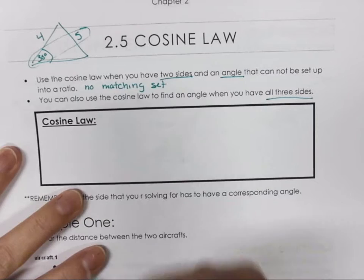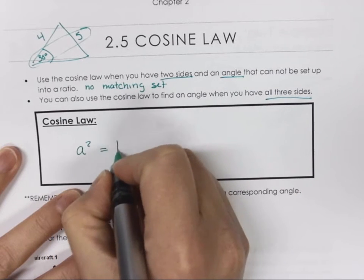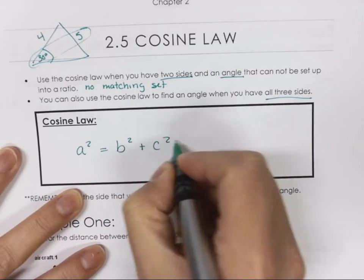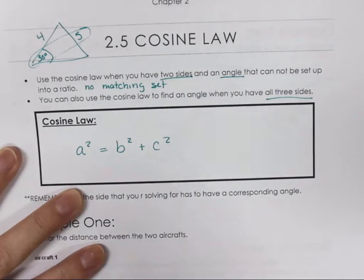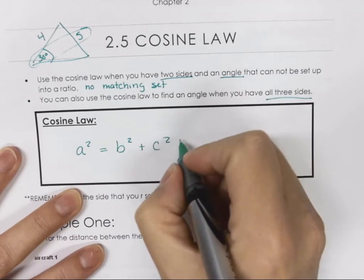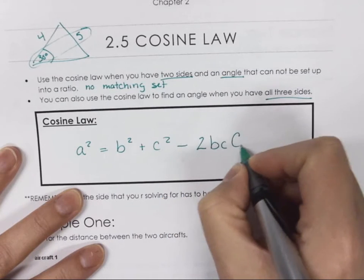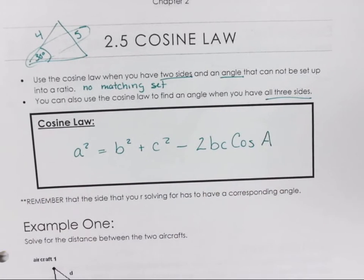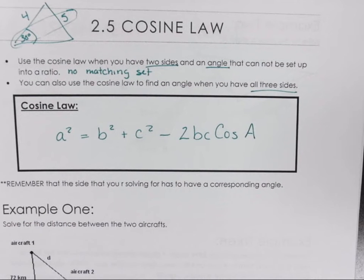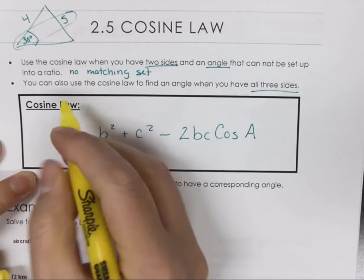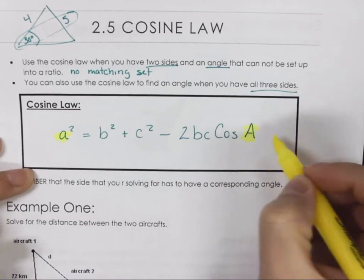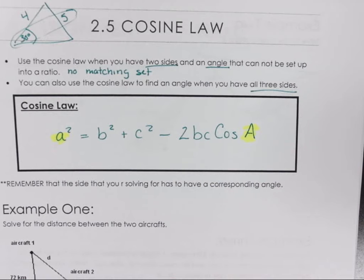Cosine law we're going to do when we don't have a matching set. You can use cosine law to find an angle when you have all three sides. When you're given no angles and you have all three sides, you can use it then as well.